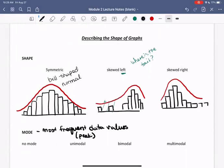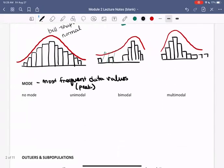So there are four main types of modes that we see. No mode means the data is uniform. Data for a histogram with no mode looks like the bars are pretty equal.